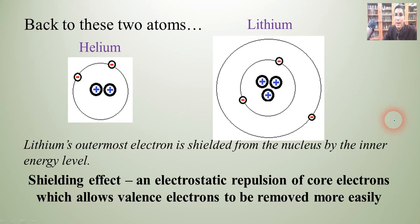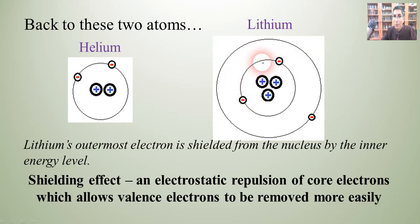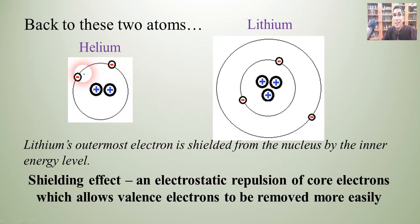Shielding effect is basically an electrostatic repulsion of core electrons, which allows valence electrons to be removed much more easily. We can see that these two inner electrons are repelling each other — that's shielding — so that the outermost electron can be pulled away a lot more easily. Look at helium — is there any shielding at all? No, because there are no core electrons to have any shielding effect at all.